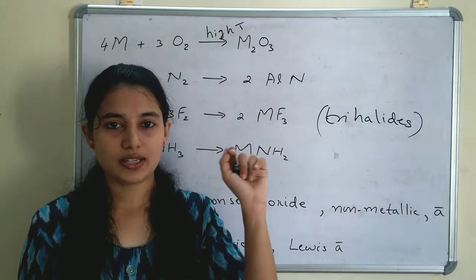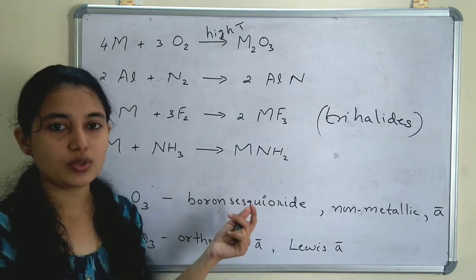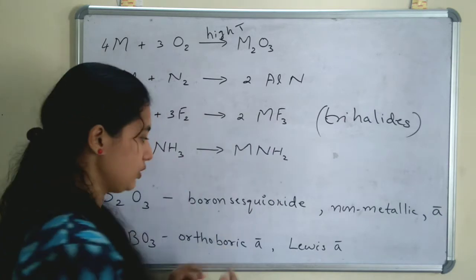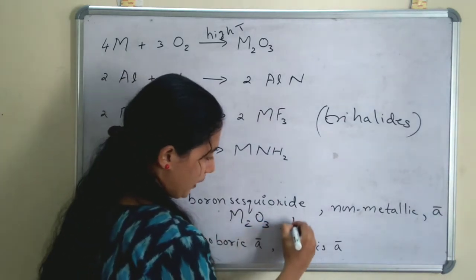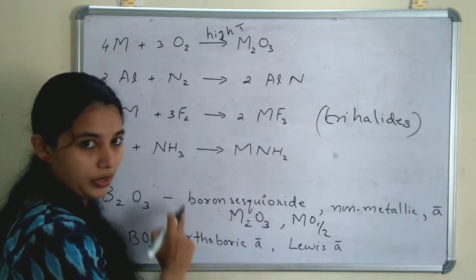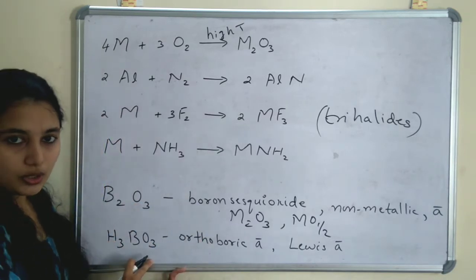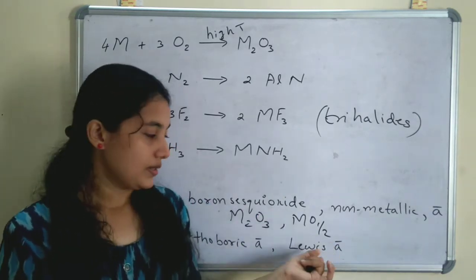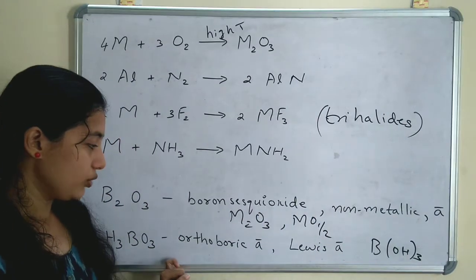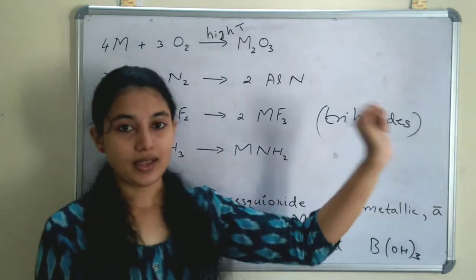Just like S block elements have a first element anomaly, in group 13 the first element is boron and we study compounds formed by boron specifically. B2O3 is boron sesquioxide — sesqui means one and a half, so the formula is M2O3. Boron sesquioxide is a non-metallic oxide with acidic properties. H3BO3 is orthoboric acid, which is a weak acid and a Lewis acid. It can be written as B(OH)3.